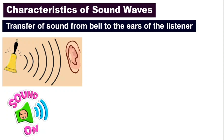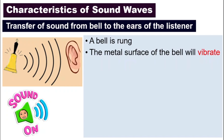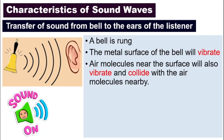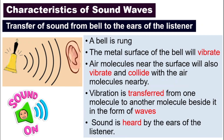So how does sound transfer from the source to our ears? We can take the example of a bell. A bell is rung and the metal surface of the bell vibrates — that is what produces the sound. The air molecules around the surface start to vibrate and collide with the air molecules nearby, and this vibration transfers from one molecule to the other in the form of waves. That's why we call it sound waves. It then reaches our ear, where the eardrum vibrates and sends a signal to your brain, letting you know that you have heard a sound — in this case, the sound of a bell ringing.